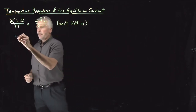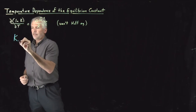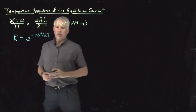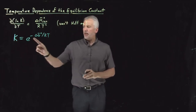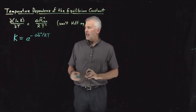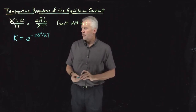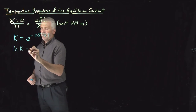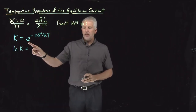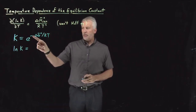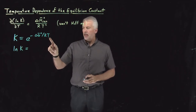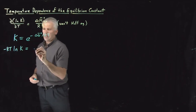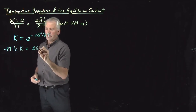To look at that from a different point of view, let's go back to the expression that relates equilibrium constants to the Gibbs free energy of the reaction. Taking the log of K so that we don't have an exponential, we have minus ΔG over RT on the right side. Moving the minus RT over, we have ΔG on that side.